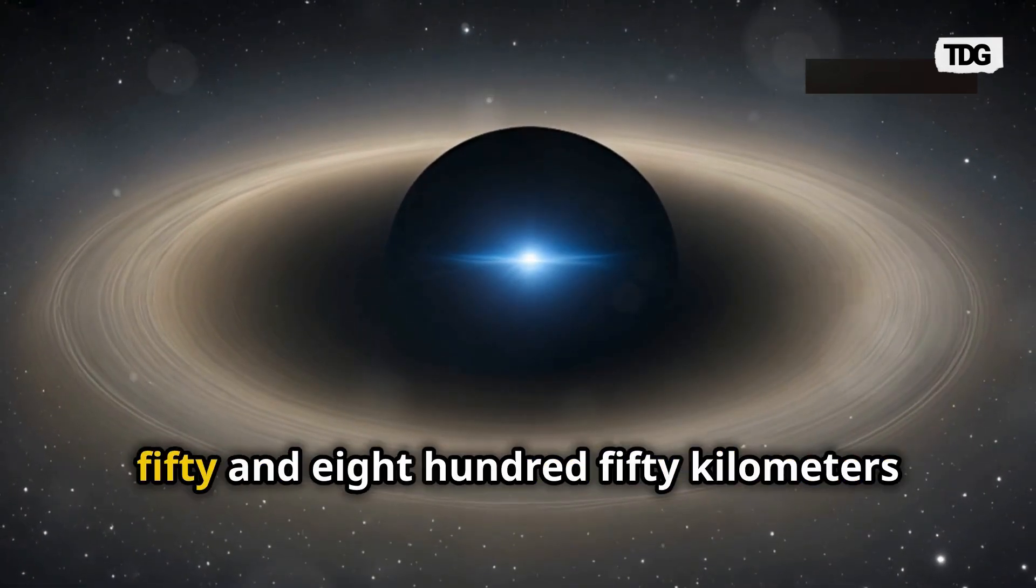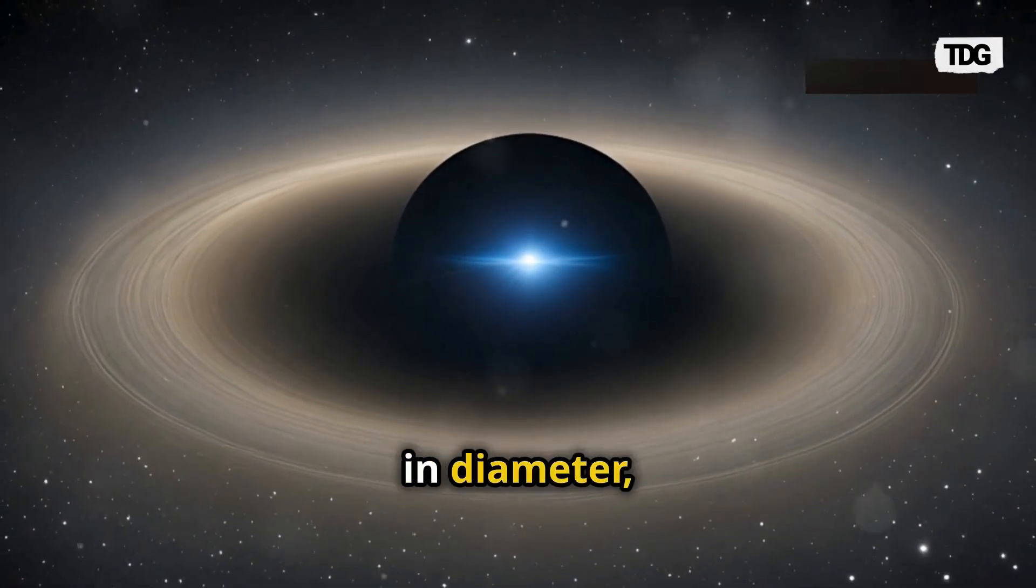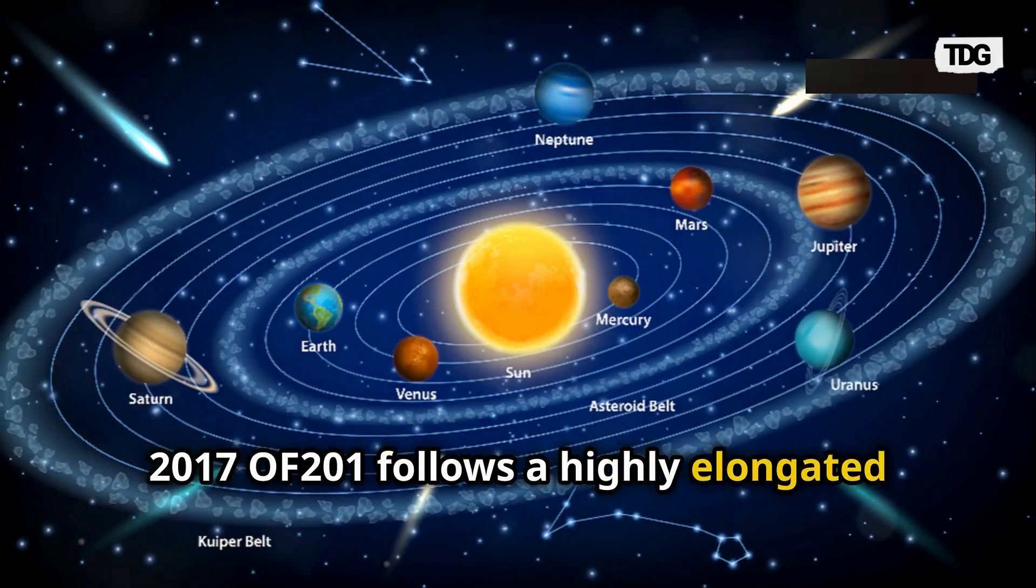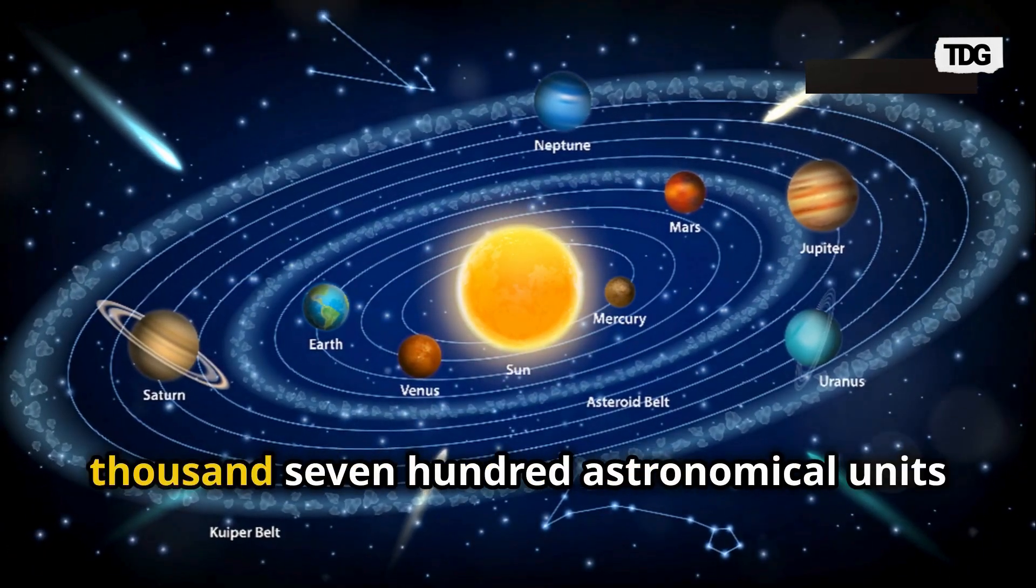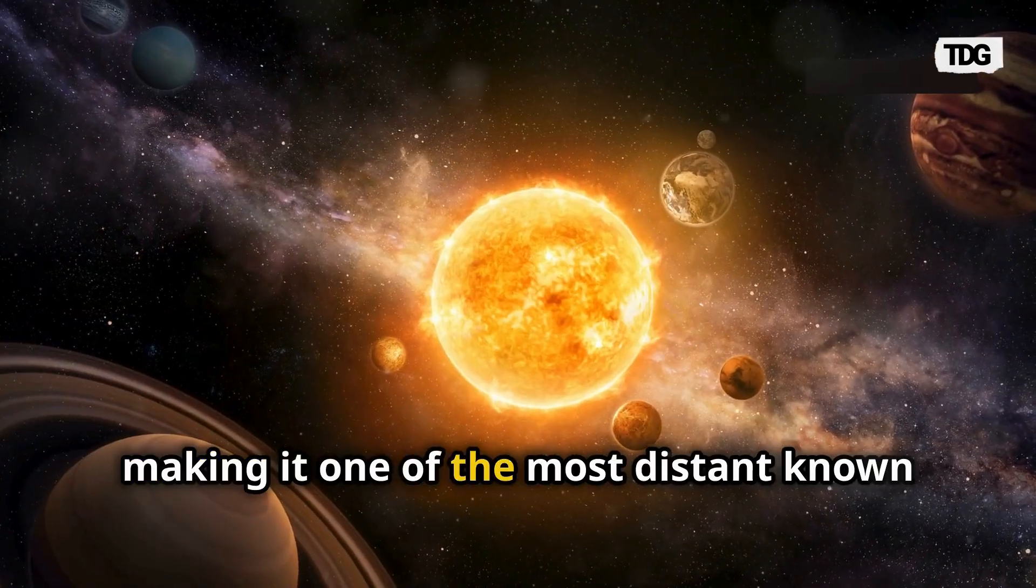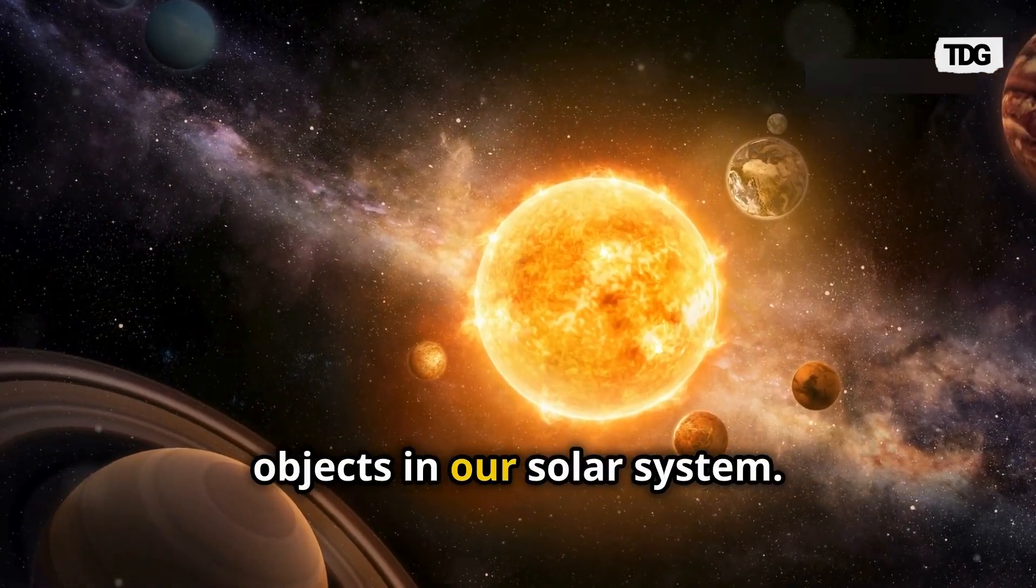Estimated to be between 550 and 850 kilometers in diameter, 2017 of 201 follows a highly elongated orbit that stretches as far as 1,700 astronomical units from the sun, making it one of the most distant known objects in our solar system.